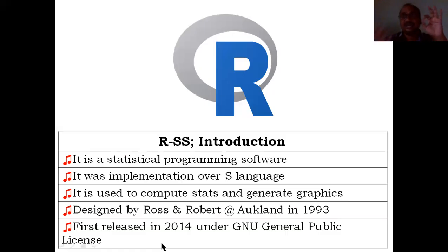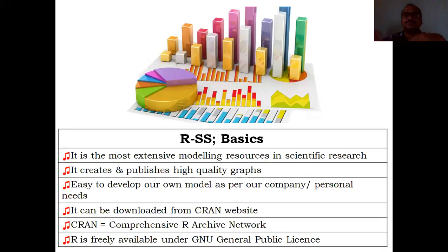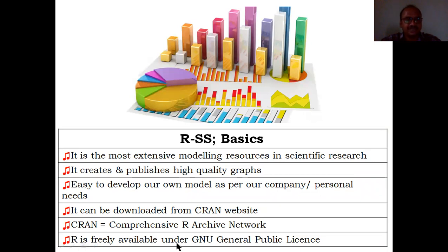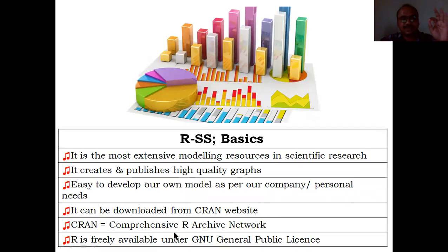GNU stands for General Public License — 'general public' means it is free. R is freely available under the GNU General Public License; anybody can download it at no cost from the CRAN website. CRAN stands for Comprehensive R Archive Network. I will show you the website as well.